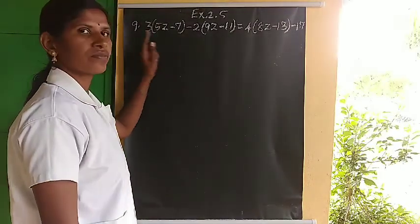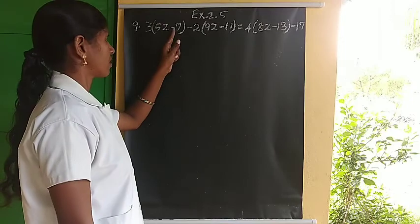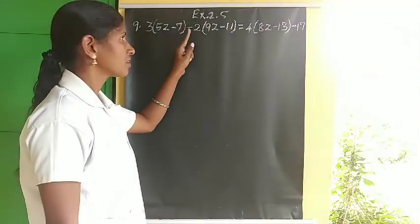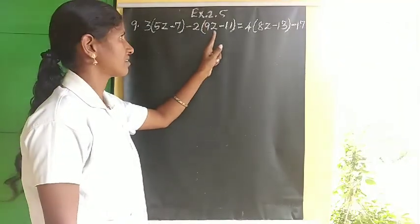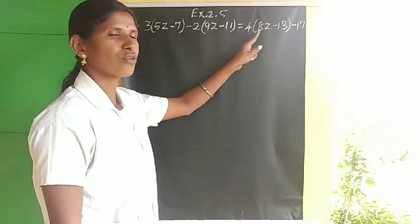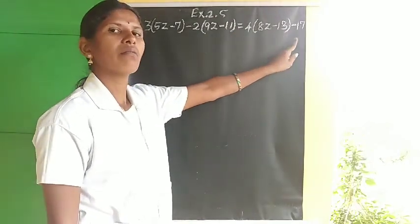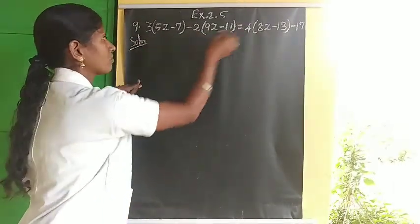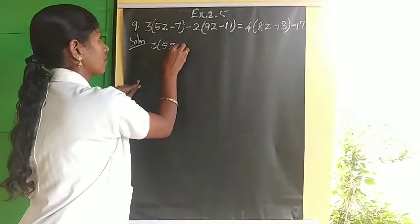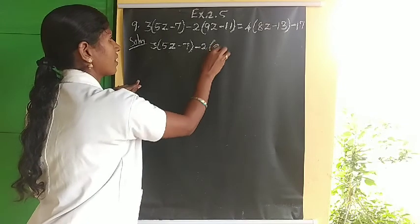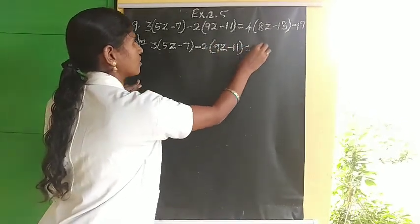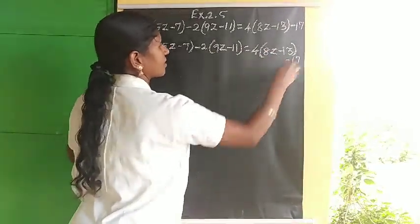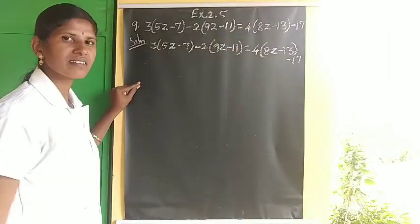Next is the ninth sum: 3 times (5z minus 7) minus 2 times (9z minus 11) equals 4 times (8z minus 13) minus 17. We expand by multiplying all numbers inside the brackets: 3 times 5 gives 15z, 3 times 7 gives minus 21, 2 times 9 gives minus 18z, 2 times 11 gives plus 22.